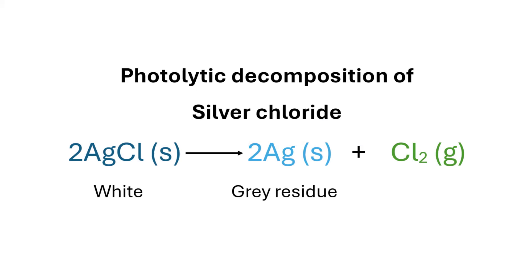The photolytic decomposition of silver chloride can be represented by the following chemical equation. The grayish residue that remains in the watch glass is elemental silver. The yellowish-green fumes released from the silver salt is chlorine gas.